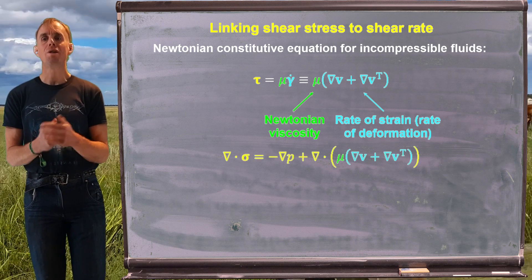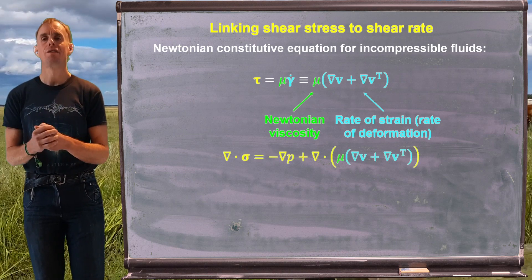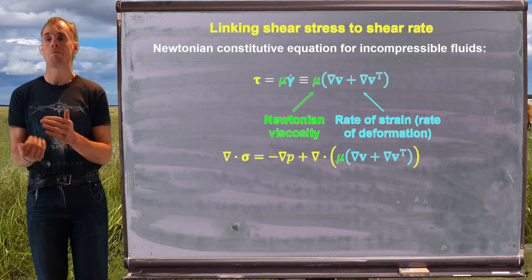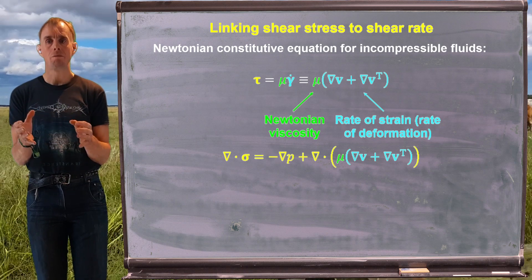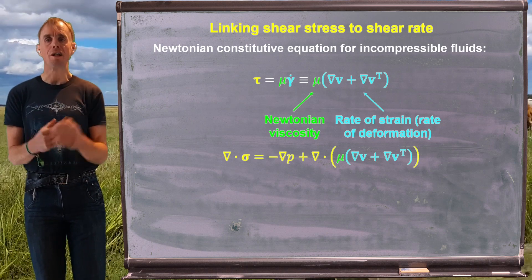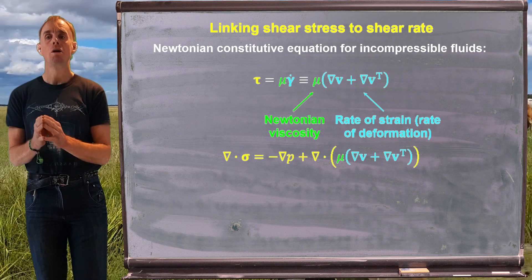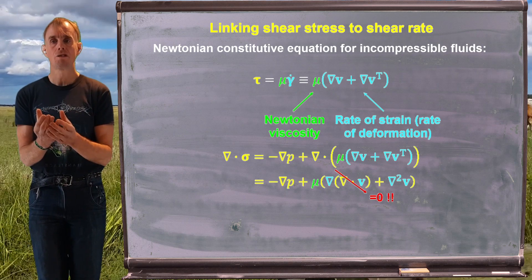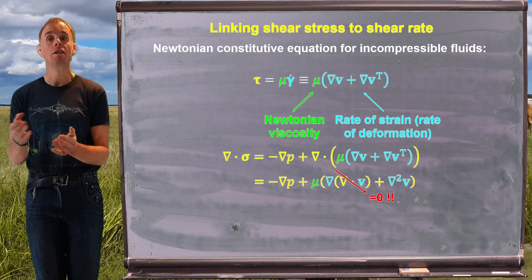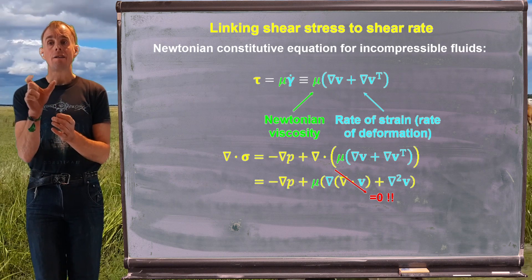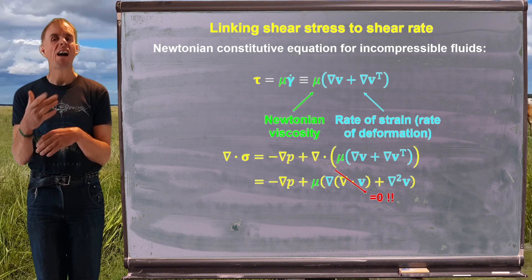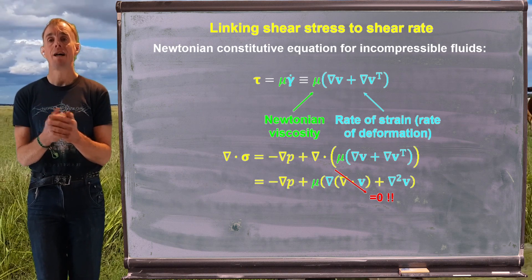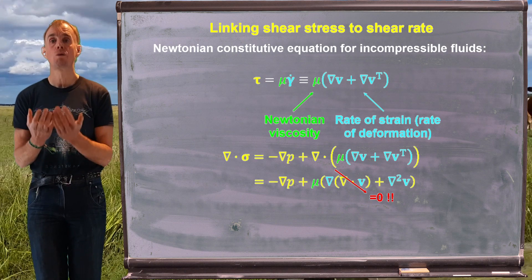So what we can do is insert that Newtonian constitutive equation into del dot sigma, which equals minus grad p plus del dot tau, which is del dot what's in those yellow brackets. So let's think carefully how we expand that out. And if we take the divergence of the quantity in those brackets, and you can prove this quite easily in Cartesian coordinate space, del dot grad v effectively is equivalent to the grad of del dot v. And del dot v for an incompressible fluid is zero. That's my equation of continuity.